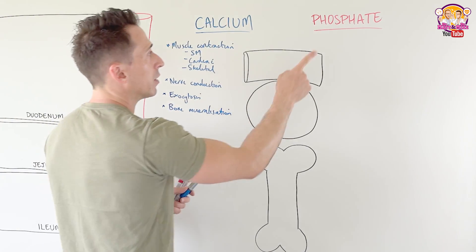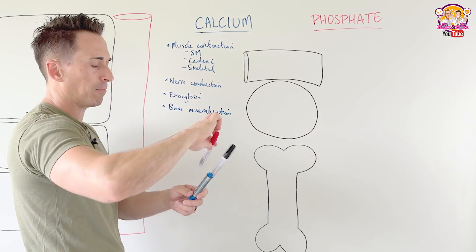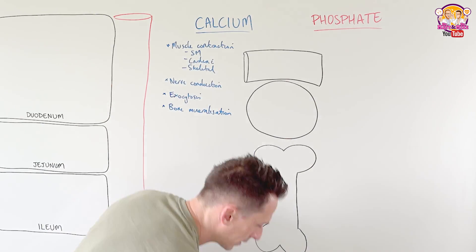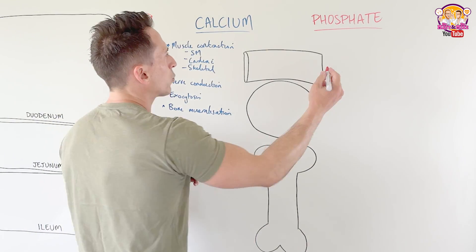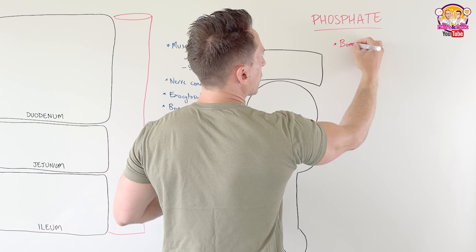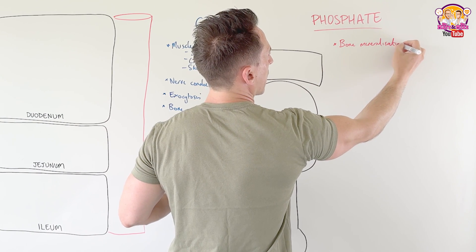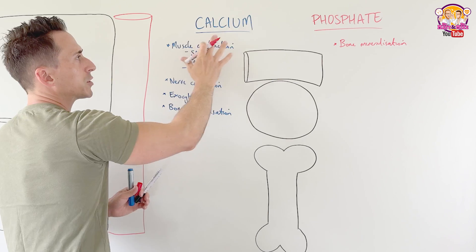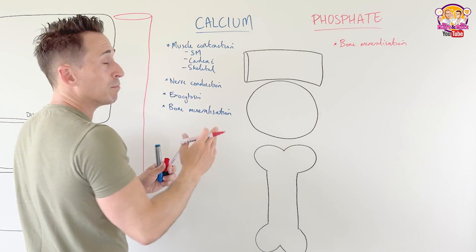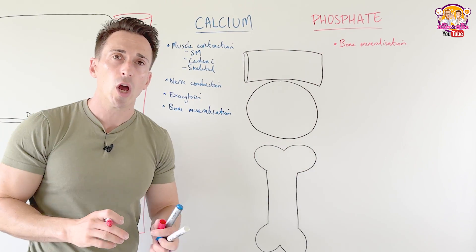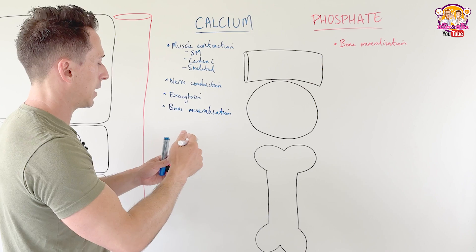So let's talk about phosphate. One of the roles of phosphate, again, is bone mineralization. So along with calcium, both calcium and phosphate will be deposited within bone, and it forms something called hydroxyapatite. I'll talk about that in a sec.